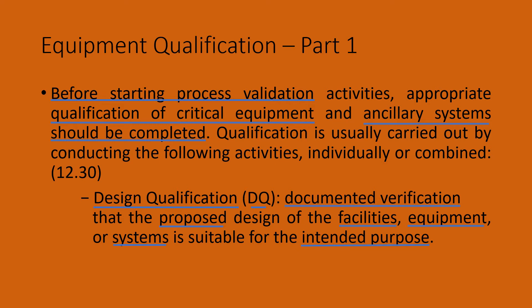Let us understand the first aspect of qualification: the design qualification. It is a documented verification, meaning all the critical information has to be recorded as a document on time. Proposed design aspects should be extended to facilities also. Facilities include the building infrastructure, necessary support systems, clean rooms, etc. It is easier to qualify facility design by a separate document as it may deal only with the building infrastructure. Systems may include routine generic operating systems to comply with GMP.